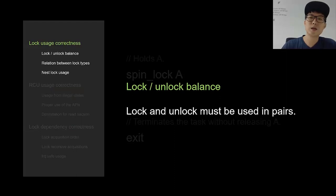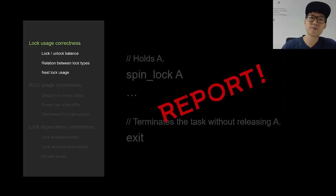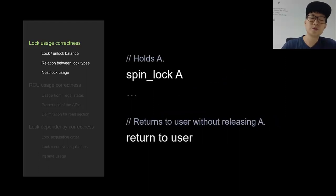Lock and unlock must be used in pairs. This code tried to terminate the task without releasing lock A, which is problematic, so LockDev reports it as a problem. Similarly, this code tried to return to user without releasing A, which is also problematic, so LockDev would report it as a problem.